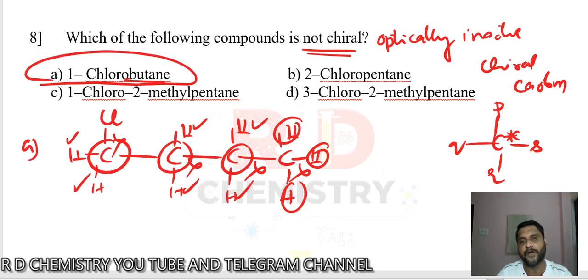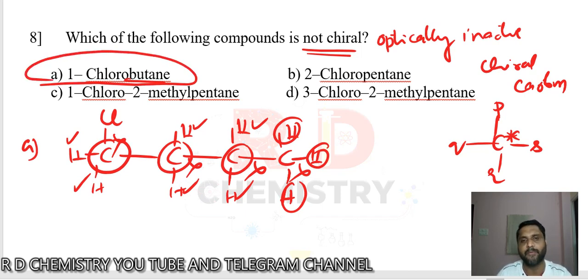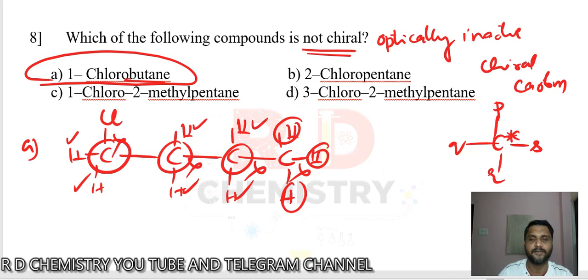In the other options, at least one carbon will have 4 different groups attached to it — groups must not repeat on the same carbon for it to be chiral. The answer is option A (1-chlorobutane).